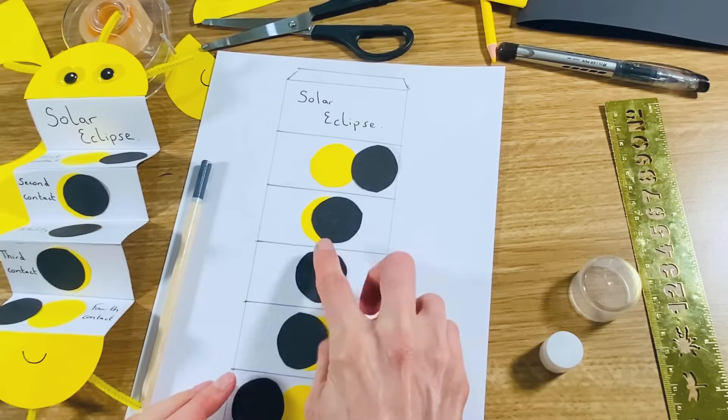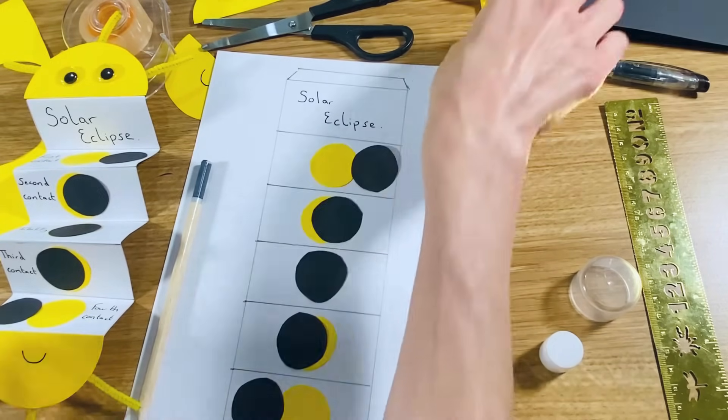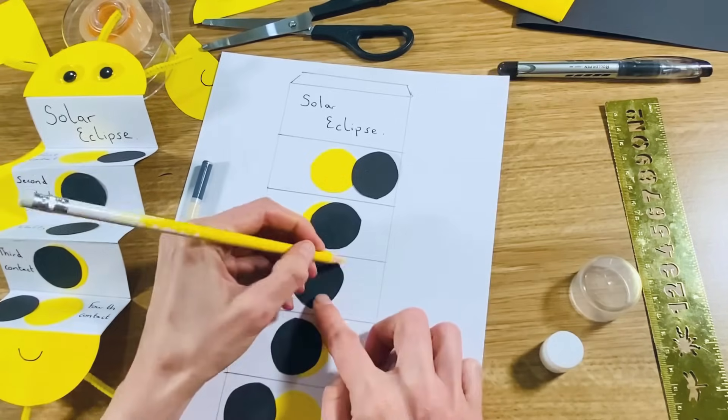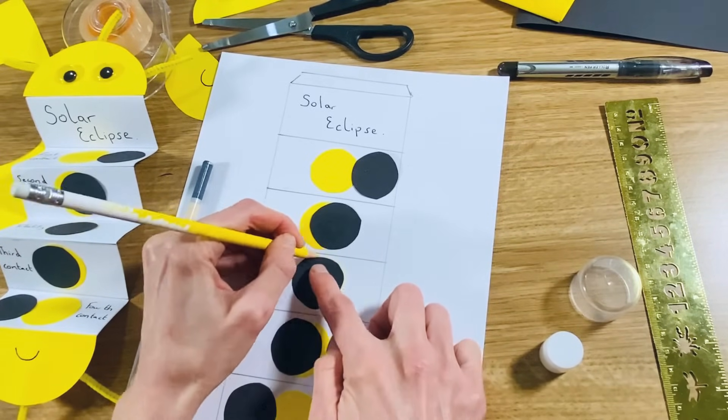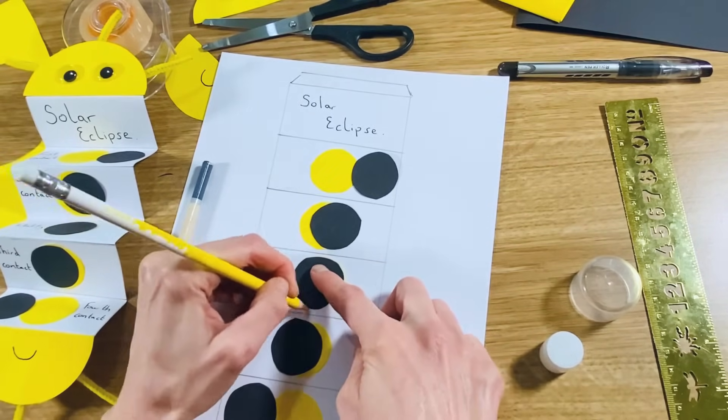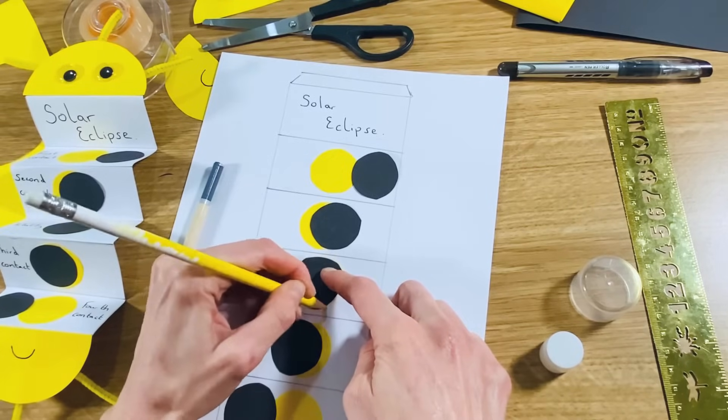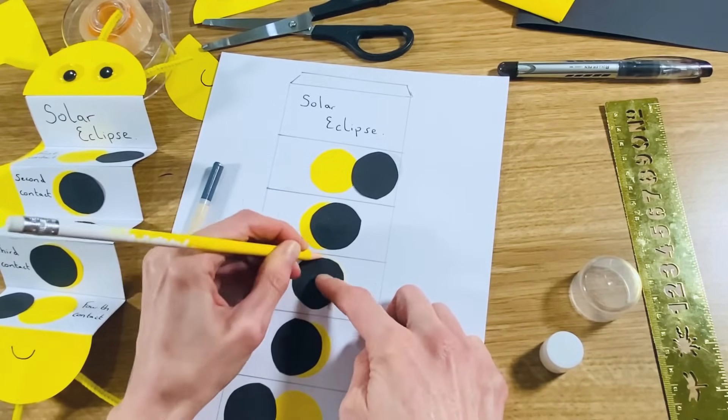And then with this box here, I'm just going to add, using my yellow coloring pencil, a little tiny yellow circle around the outside, because during a total eclipse you can just see the sun's atmosphere or corona.